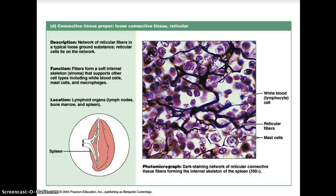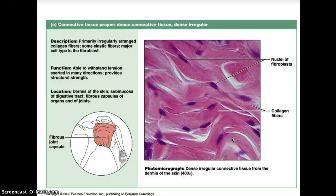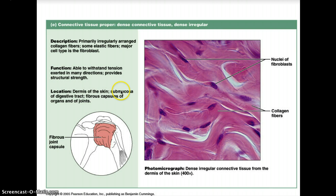Reticular tissue cells and the matrix contain only reticular fibers, which is why we get loose connective reticular tissue. Under dense connective tissue proper we have three types: regular, irregular, and elastic. Dense irregular connective tissue has primarily irregularly arranged collagen fibers, some elastic fibers, and the major cell type is the fibroblast. Its functions include withstanding tension in many directions and providing structural strength. Its location includes the dermis of the skin, submucosa of the digestive tract, fibrous capsules of organs, and joints.